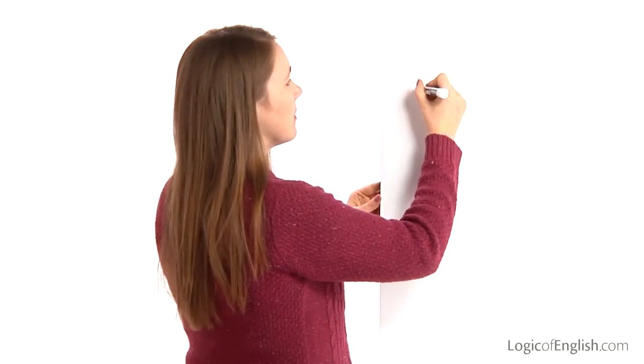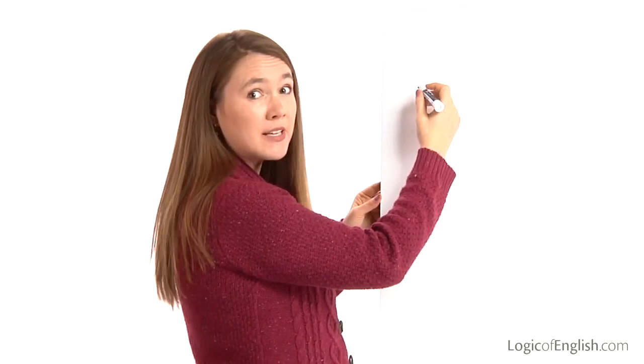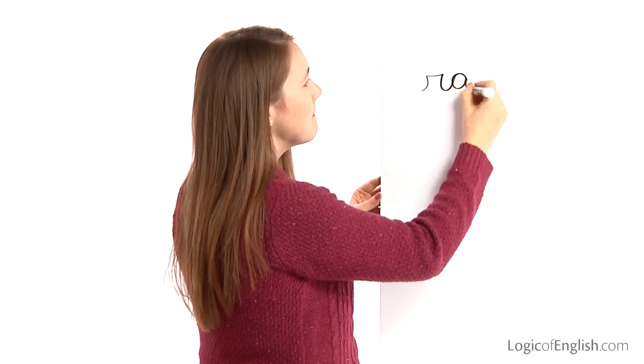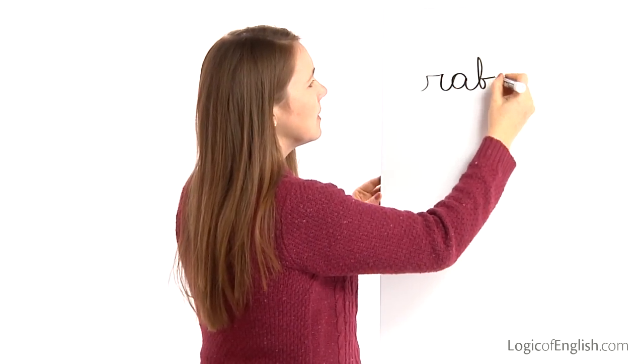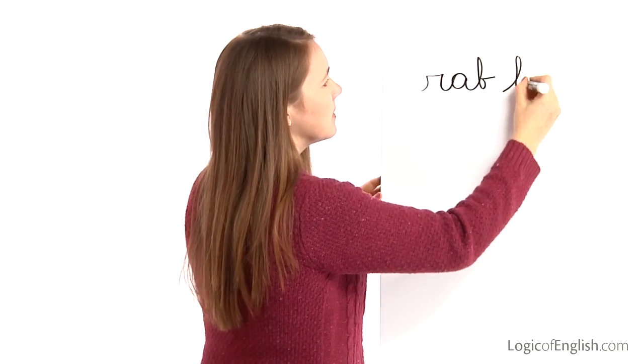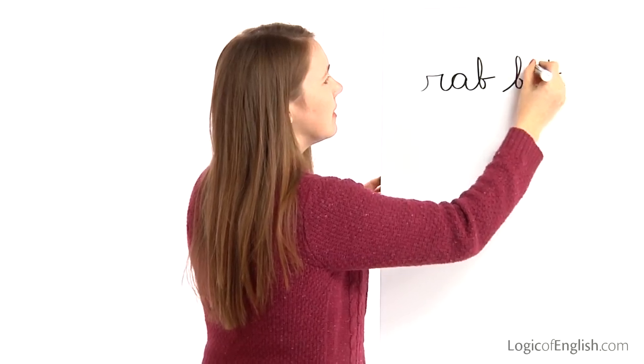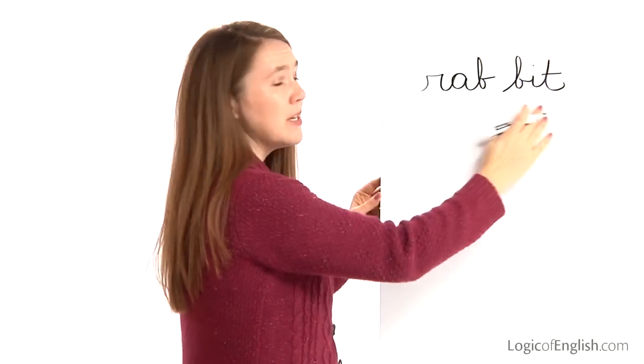Very good. Now help me to write it. Make sure you're sounding it out with me. R, a, b, b, i, t. Rabbit.